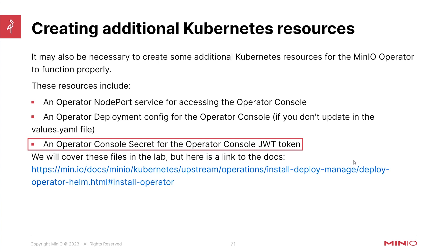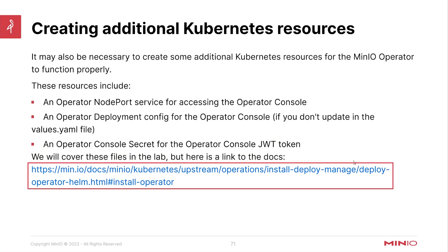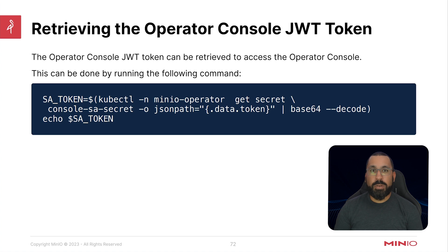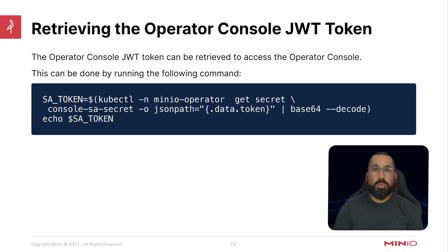We'll cover these files in the lab, and there's a link to the MinIO docs in the description for more detail. Finally, to access the operator console, you'll retrieve the JWT (Java Web Token) associated with the deployment — there's no username and password, just a dynamically generated JWT you use to log in. With that, let's jump into the guided exercise where I'll walk through my lab environment and work through everything discussed, then dive into actually accessing the console.